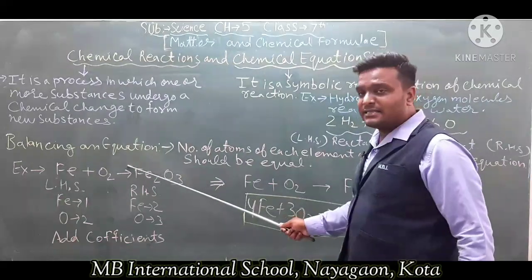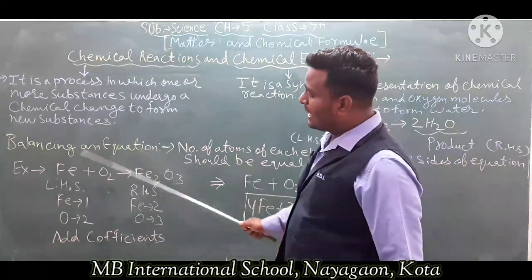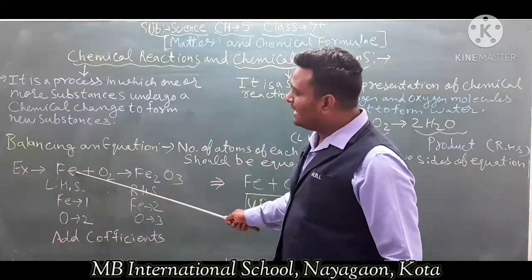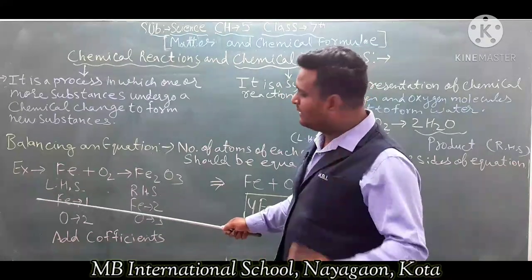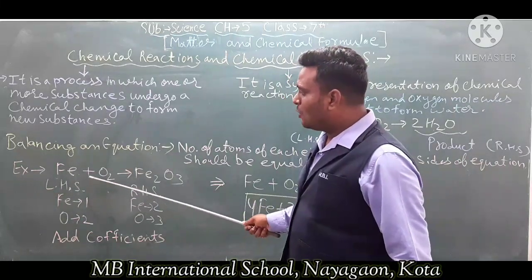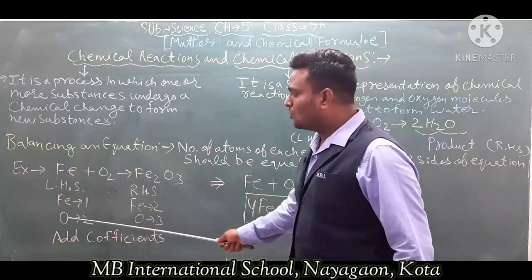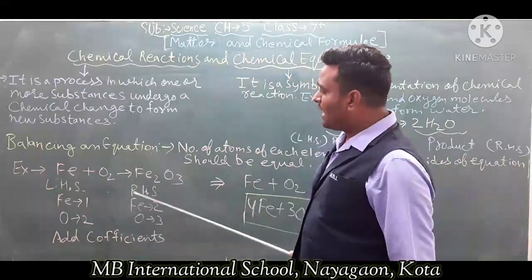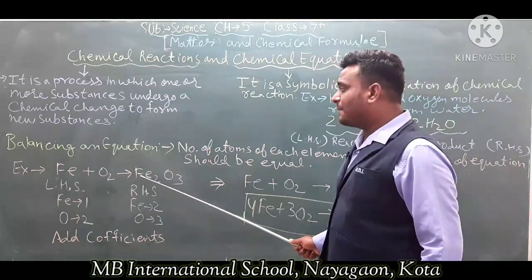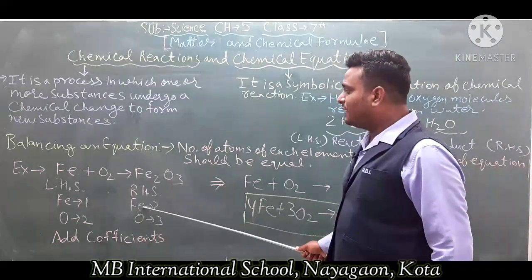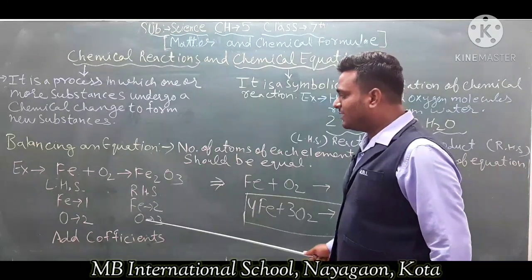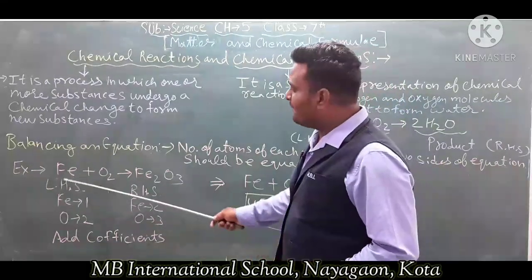Now in LHS and RHS, we will see the number of atoms of each element. On the LHS there are two elements: Fe has 1 atom and O has 2 atoms. On the RHS, Fe has 2 atoms and Oxygen has 3 atoms. Since these are unequal, the equation is unbalanced.